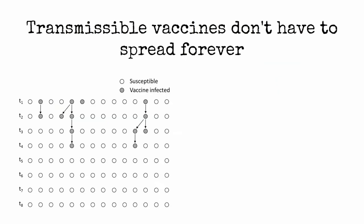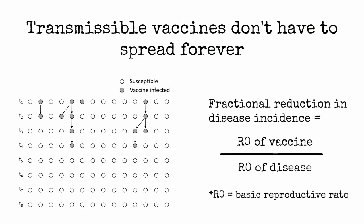Transmission of a vaccine does not mean that it will spread forever, but it doesn't have to spread forever to reduce disease incidence. Any vaccine transmission helps. The reduction in disease incidence depends on how transmissible the vaccine is relative to the disease.